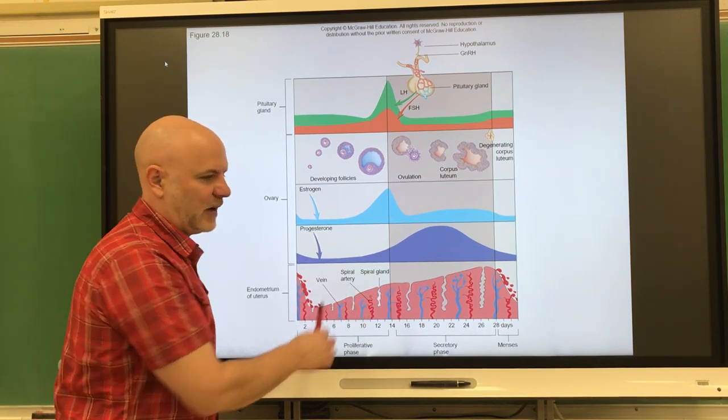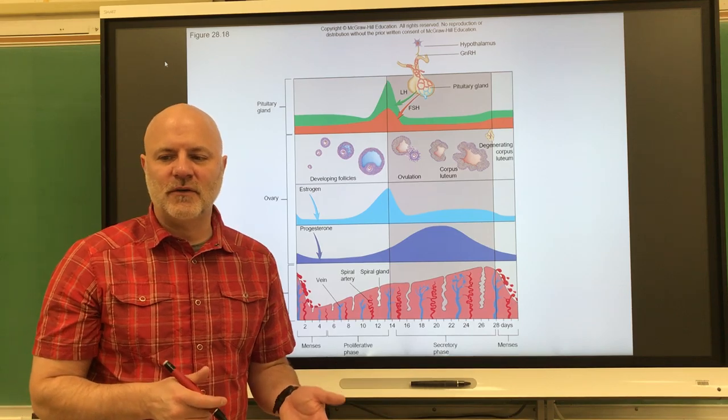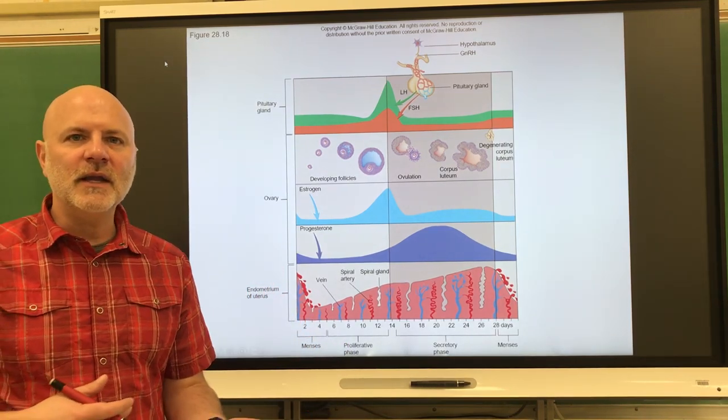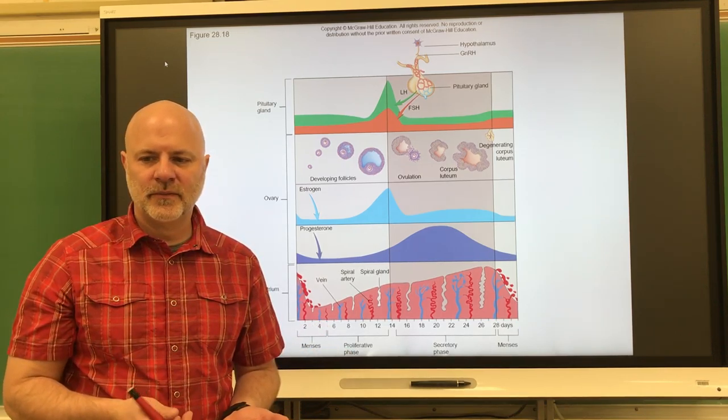That's what we see occurring here, the endometrium getting thicker. This also causes a thinning of the cervical mucus, which allows sperm to enter into the uterus and eventually get to the fallopian tubes.